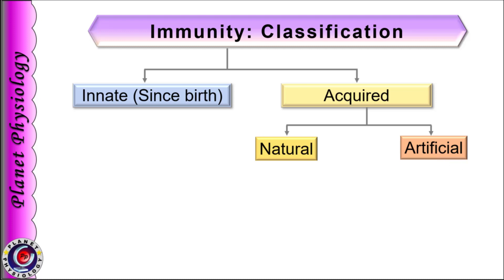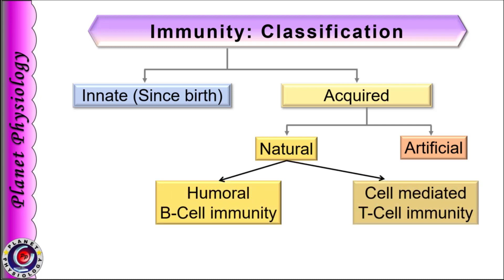Immunity is mainly provided by activation of lymphocytes. Depending upon the type of lymphocytes getting activated, and hence the type of response shown by the body to the pathogens, immunity is further subclassified into humoral and cell-mediated immunity. Humoral immunity is conferred by B lymphocytes whereas cell-mediated immunity is by T lymphocytes.